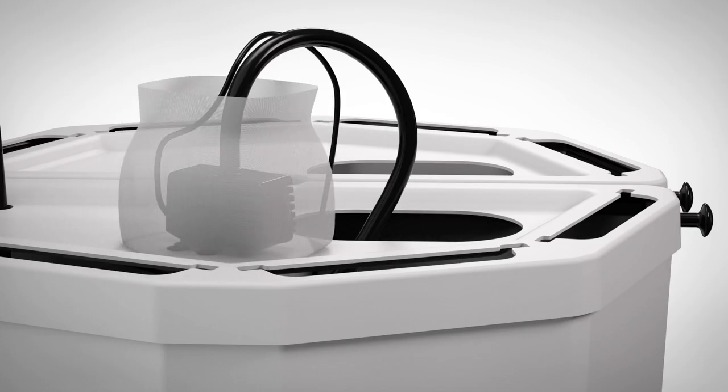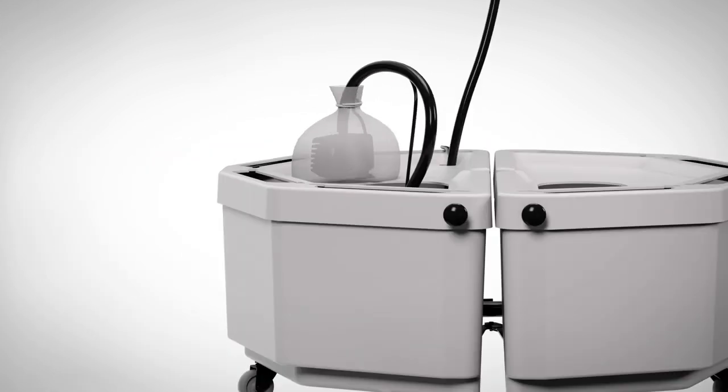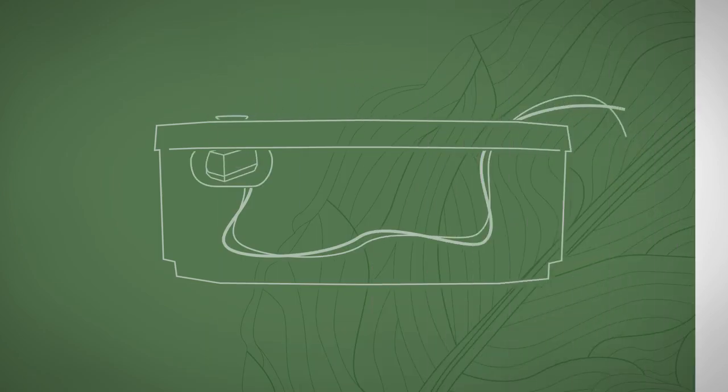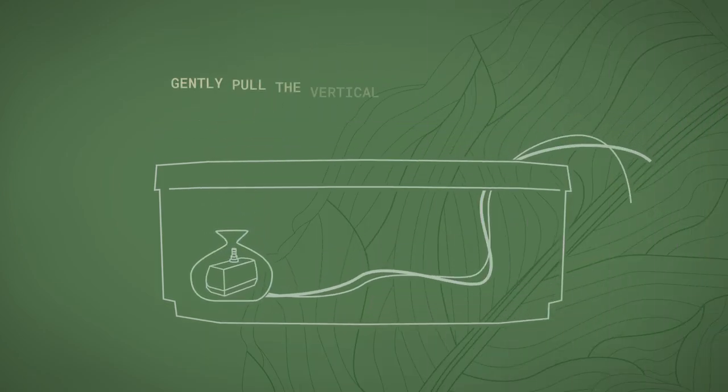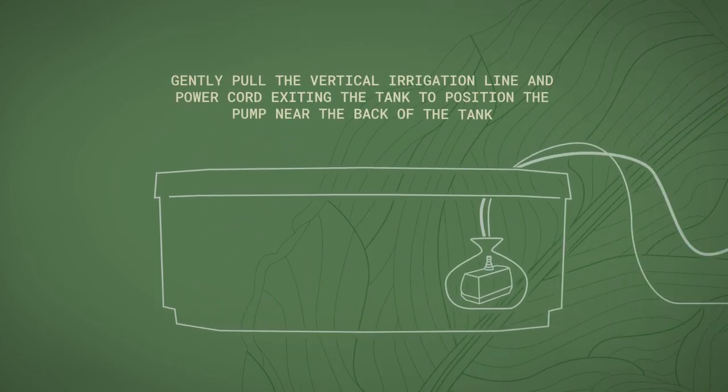Place the pump into the pump filter bag allowing the power cord and vertical irrigation line to exit the bag. Tie the pump filter bag closed and place the pump into the bottom of the tank through the oval opening. Gently pull the vertical irrigation line and power cord exiting the tank to position the pump near the back of the tank.